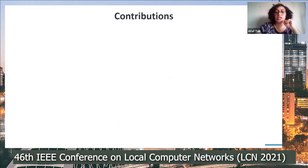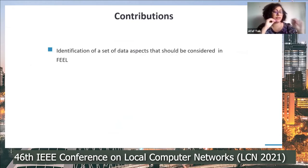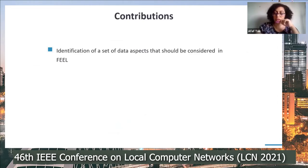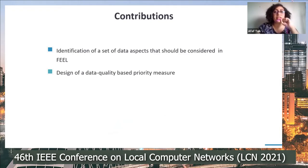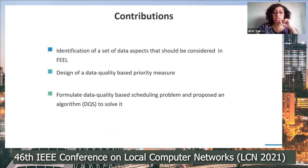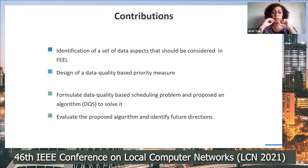To tackle these challenges, our paper presents the following contributions: we identify a set of data aspects that should be considered in federated edge learning; we design a data quality based priority measure that takes into consideration data diversity and reliability in a privacy-preserving manner; we formulate a data quality based scheduling problem and propose an algorithm to solve it; and finally, we evaluate the proposed algorithm and discuss future directions.